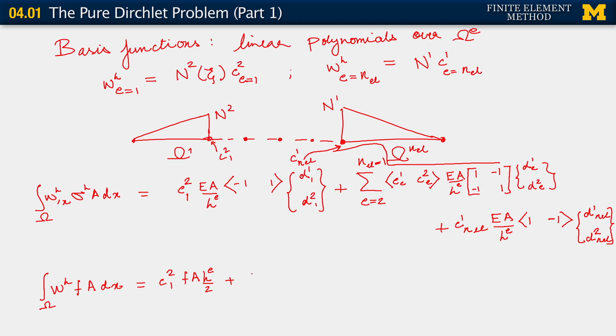From the other elements, we will get a contribution which has the same form as our main sum over all the elements when we were doing the Dirichlet-Neumann problem. This is sum going from E equals 2 to NEL minus 1. And here in this sum, the contributions from the degrees of freedom for weighting functions are C_1 E, C_2 E, times F A H_E over 2. This thing now would be multiplied by [1; 1].